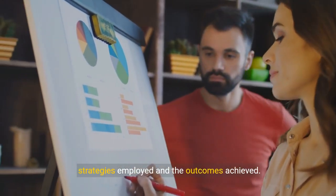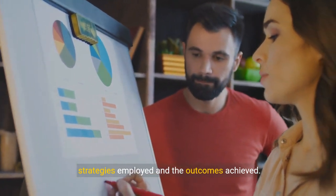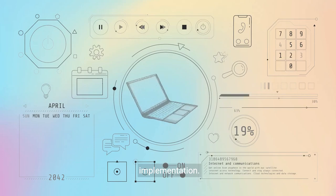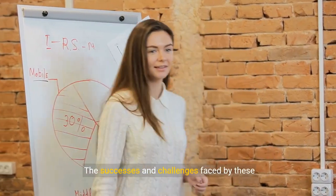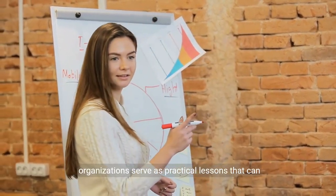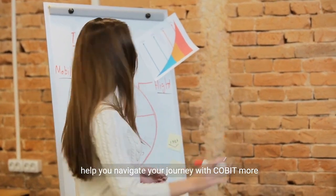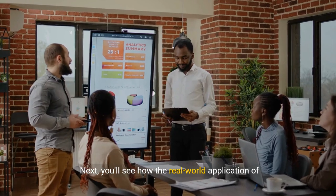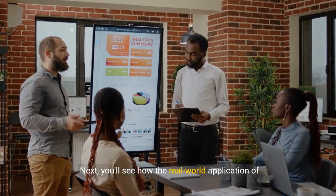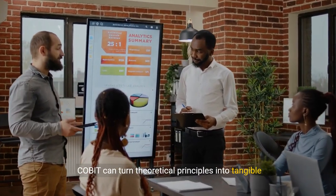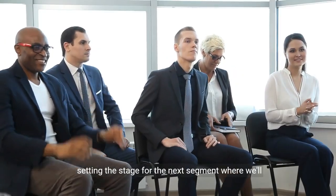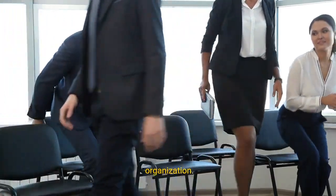From overcoming initial hurdles to achieving remarkable improvements in governance, these examples highlight the transformative power of COBIT. As we examine each case, pay close attention to the strategies employed and the outcomes achieved. These insights can provide a roadmap for your COBIT implementation. The successes and challenges faced by these organizations serve as practical lessons that can help you navigate your journey with COBIT more effectively.